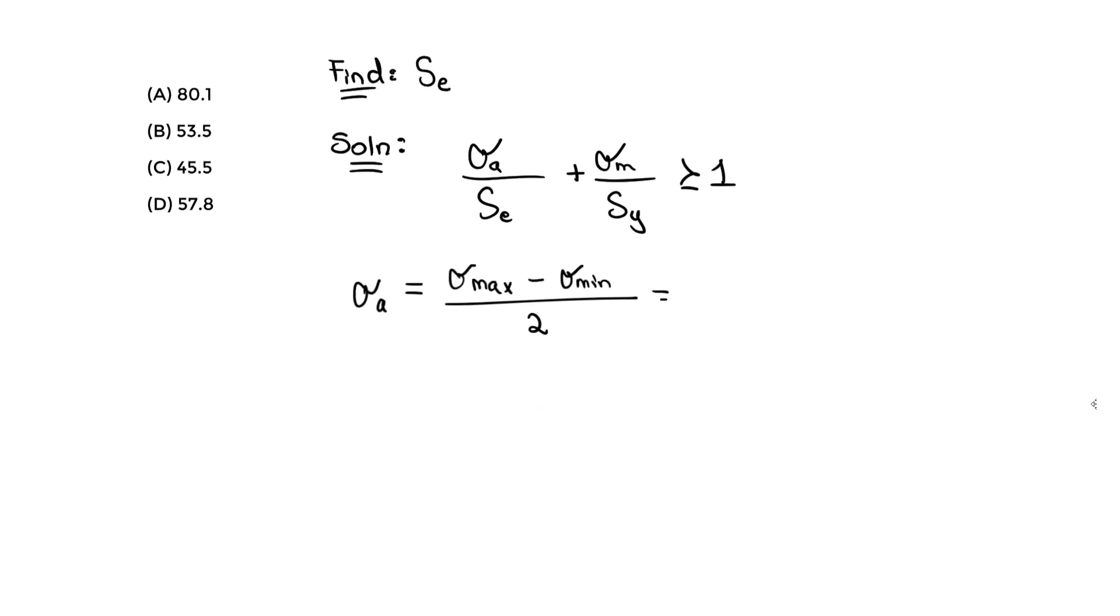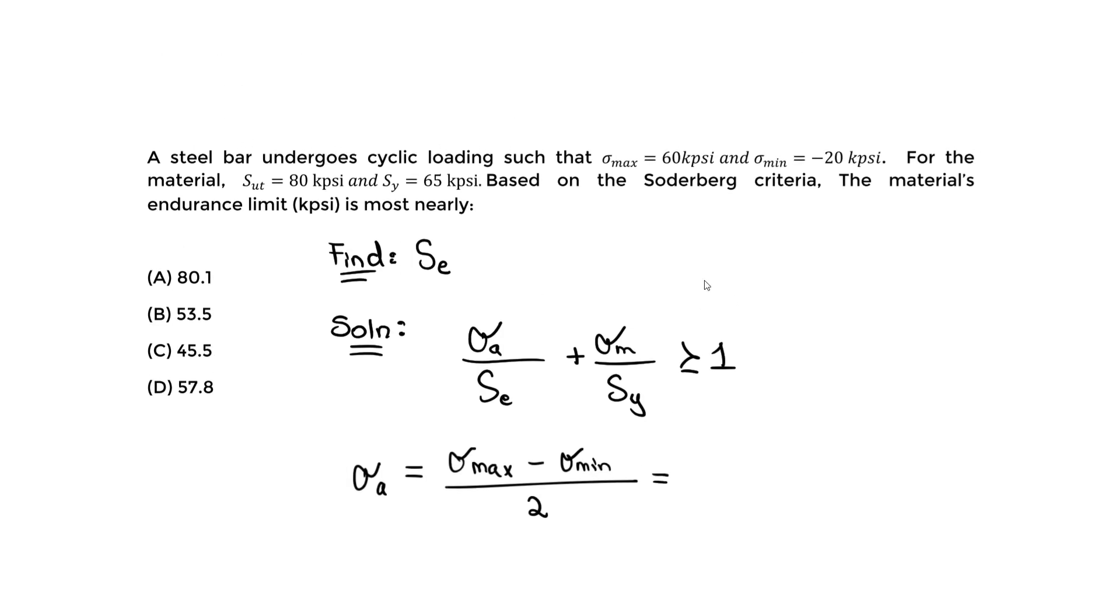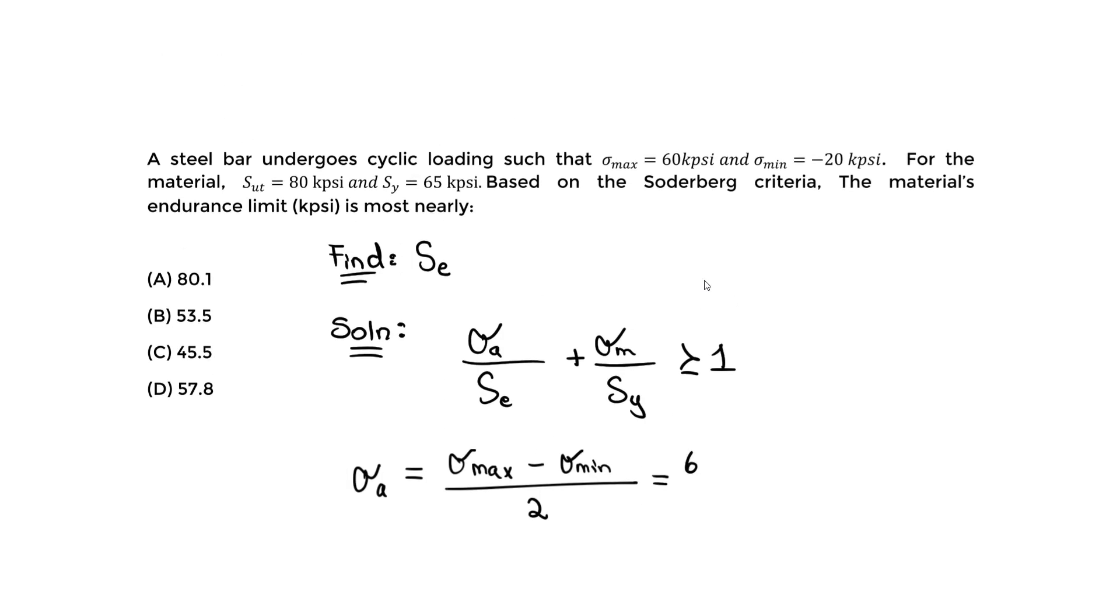Let's calculate: the maximum is 60 kpsi minus the minimum, which is minus negative 20 kpsi. Be careful—this is negative, it's compressive, so keep that negative sign and this minus. Divided by 2, we get sigma_a to be about 40 kpsi.